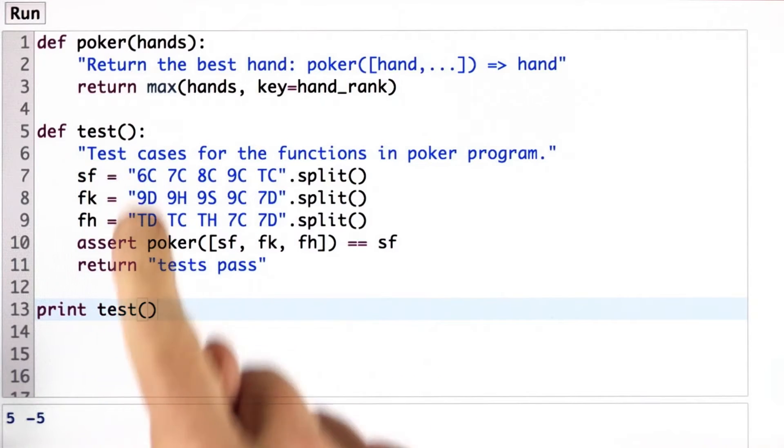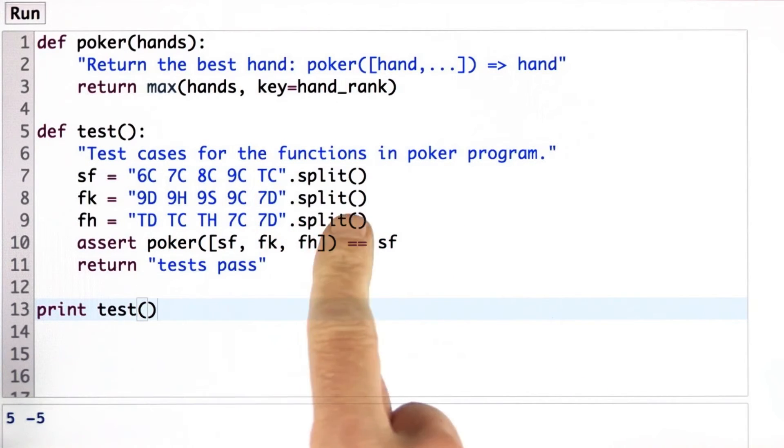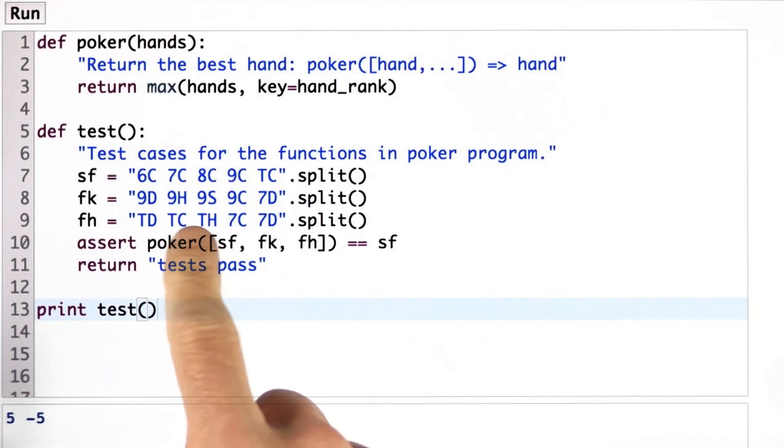Now the whole idea of having tests like this is a vital part of software development. It's important that each part of the specification gets turned into a piece of code that implements it and a test that tests it. Here we have only one test that tests part of the implementation of the poker function.